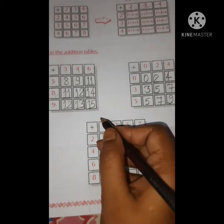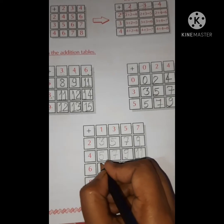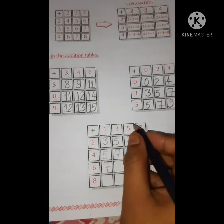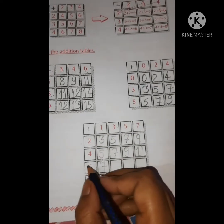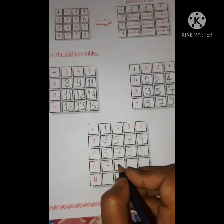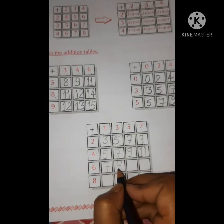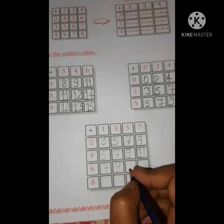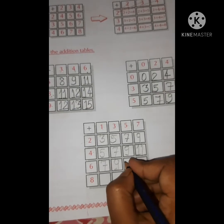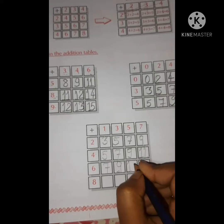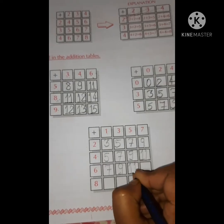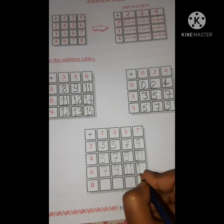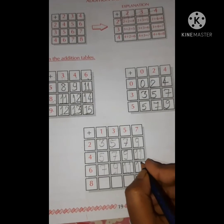Third row: six plus one is equal to seven, six plus three is equal to nine, six plus five is equal to eleven, six plus seven is equal to thirteen.